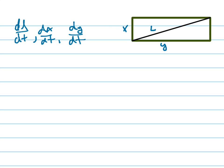I have to come up with an equation that relates x, y, and L together. Since it's a rectangle, I know that this is a right angle. So x squared plus y squared equals L squared.